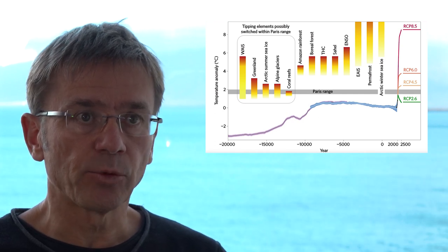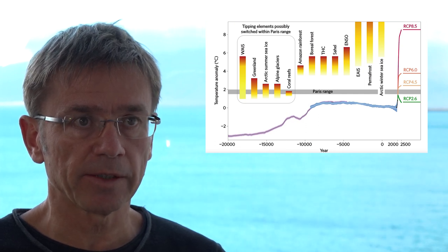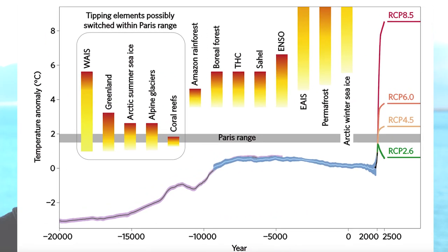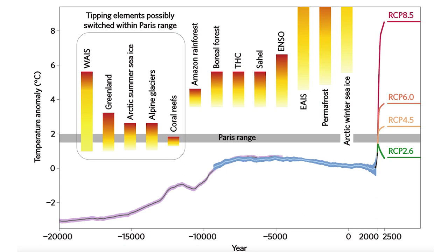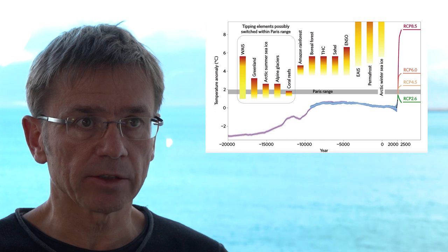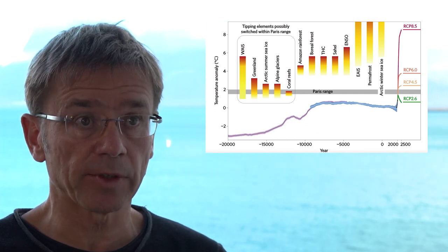Another threshold within the Paris range is the coral reefs. The coral reefs are probably already going to be destroyed after 2 degrees of warming, which is why it is critical to limit warming well below 2 degrees. It's not only the warming itself, but also ocean acidification — coming from the same carbon dioxide emissions — that threatens coral reef survival. So if we want to retain some coral reefs, we need to try very hard to stop warming at about 1.5 degrees rather than letting it go to 2 degrees.